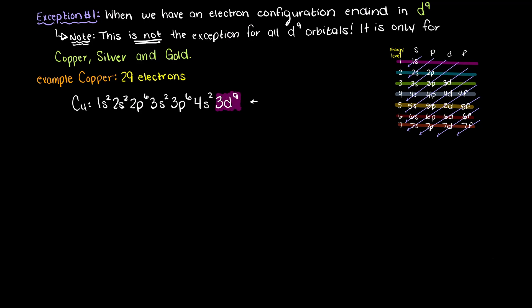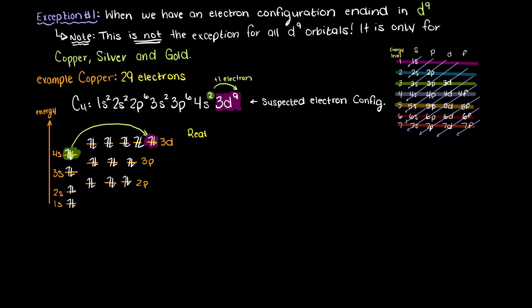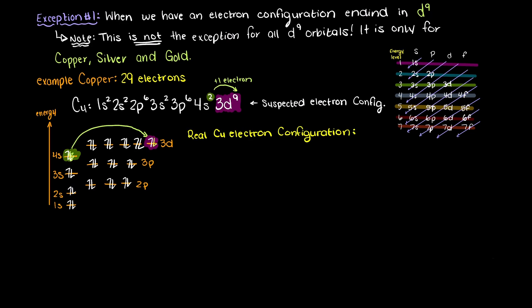However, our exception states that when we have a d9 orbital, our atoms would rather take an electron from the next lowest s orbital and fully stabilize its d orbital. The reason that the atoms prefer this electron configuration is because the d orbitals take up a lot of energy to maintain. By moving the orbital to a d10, our atom's electron cloud becomes a lot more stable.